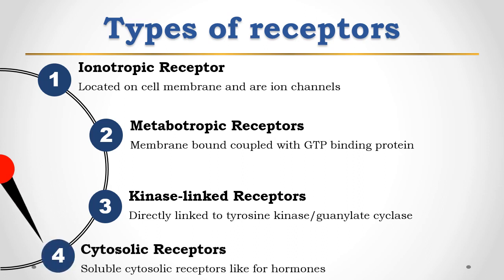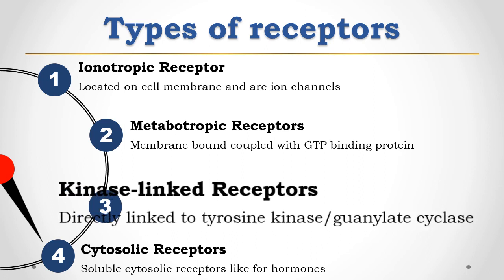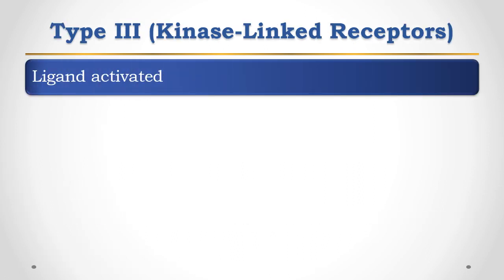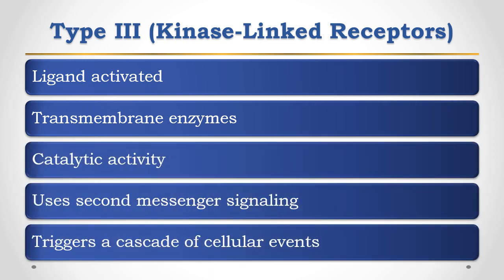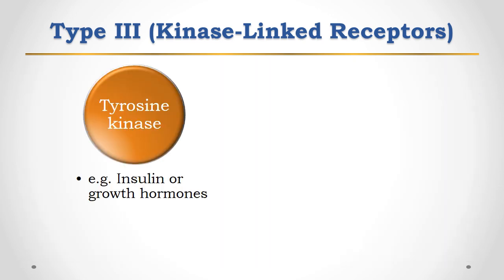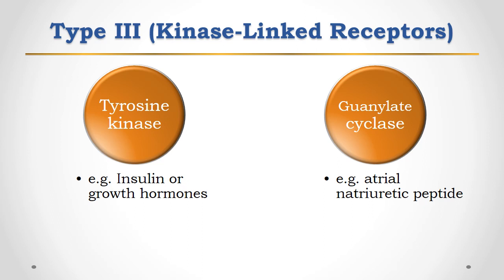In this video, we are discussing kinase-linked receptors. Kinase-linked receptors are activated by transmembrane enzymes having catalytic activity. These enzymes use a second messenger signaling pathway and trigger a cascade of cellular events to produce cellular effects. These receptors are directly linked to tyrosine kinase — for example, insulin or growth hormone receptors.